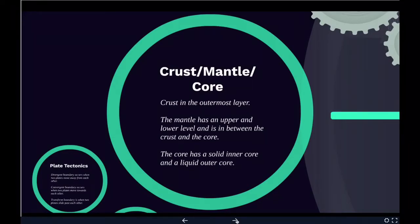The crust ranges from 5 to 70 kilometers in depth and is the outermost layer. The thin parts of the crust are oceanic crust, which underlie the ocean basins and are composed of dense iron, magnesium, silicate igneous rocks like basalt.